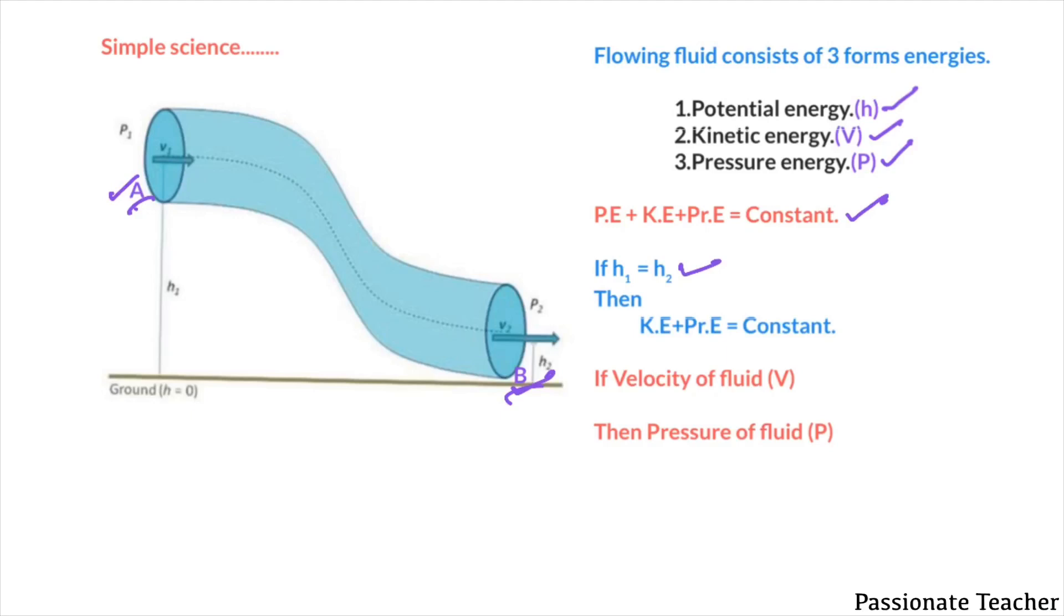Then kinetic energy plus pressure energy should be conserved. That means sum of these two energies should be constant. Now let's see what happens. If the velocity of the fluid is increasing, then the pressure of the fluid will decrease. And similarly, if the velocity of the fluid is decreasing, then the pressure of the fluid will increase.